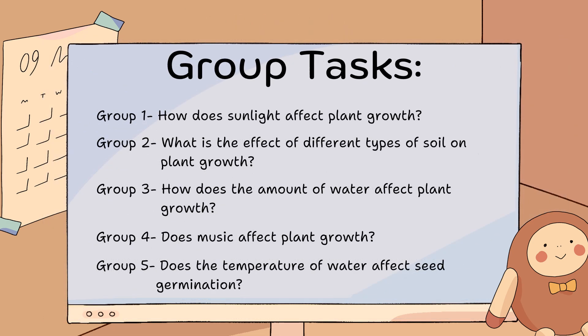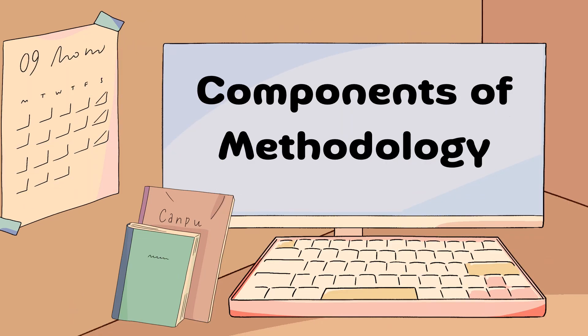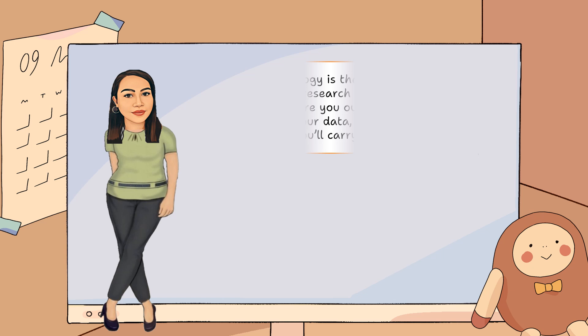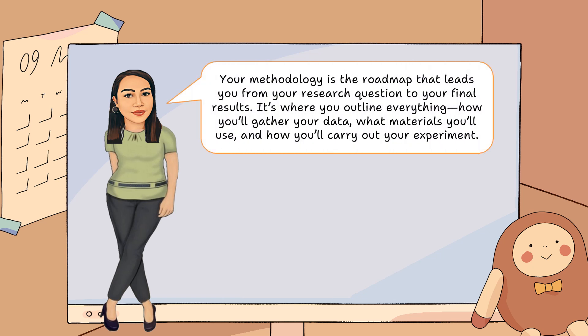Here are the specific assigned tasks for each group. Your methodology is the roadmap that leads you from your research question to your final results. It's where you outline everything — how you'll gather your data, what materials you'll use, and how you'll carry out your experiment. Let's break down the four key components of a good methodology.